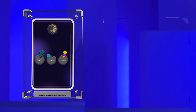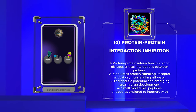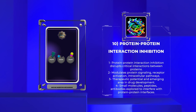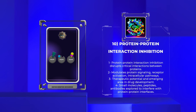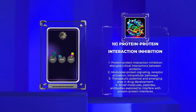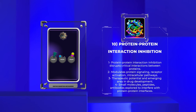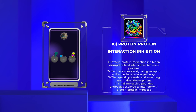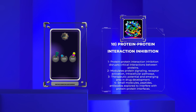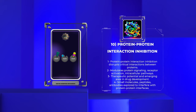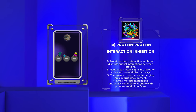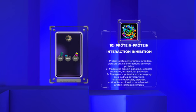Protein-protein interaction inhibition focuses on disrupting critical interactions between proteins involved in various cellular processes. By selectively inhibiting specific protein-protein interactions, this approach can modulate protein signaling, receptor activation, and intracellular pathways. Disrupting protein-protein interactions has significant therapeutic potential and is an emerging area in drug development. Small molecules, peptides, and antibodies are being explored for their ability to interfere with protein-protein interfaces, providing new avenues for targeted therapy.